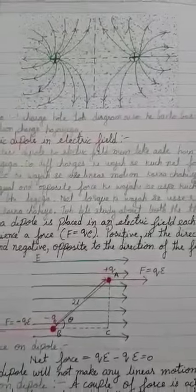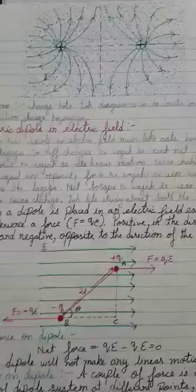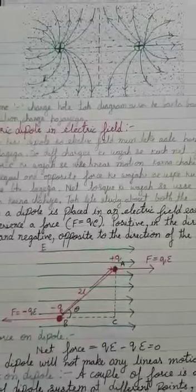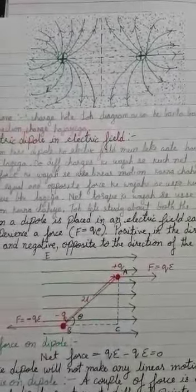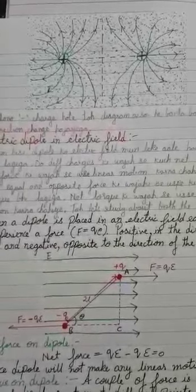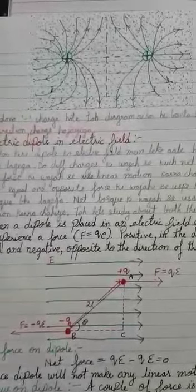Next is two positive charges. In the previous case we had a positive and negative charge. Here we have a pair which has two positive charges. You can see that from both positive charges, the electric field lines are going outward.